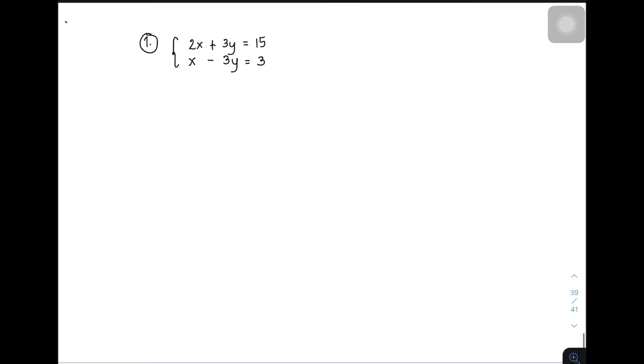We have here examples number 1 and 2. So without further ado, let's do this topic. Example number 1: the given system is 2x plus 3y equals 15 and x minus 3y equals 3. This is equation number 1, this is equation number 2. Our target here is to eliminate a single variable for us to find the other.